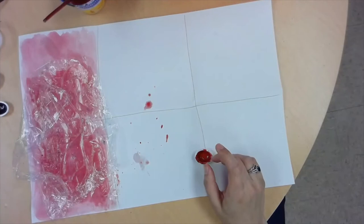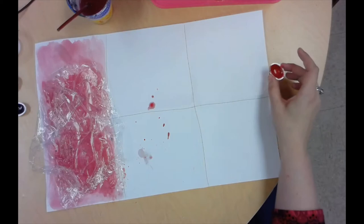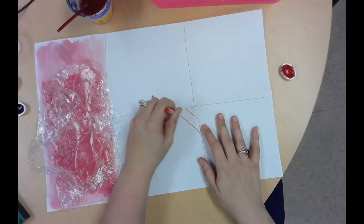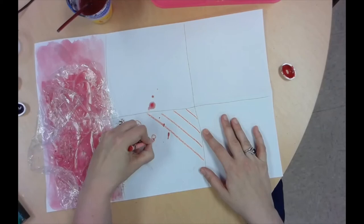Alright, we have two more techniques that we're going to do. The next one is what we call the wax resist technique. So you're just going to need red again for this. And you're going to need a red crayon. Okay? So in these boxes, you're just going to draw some simple patterns with your red crayon.